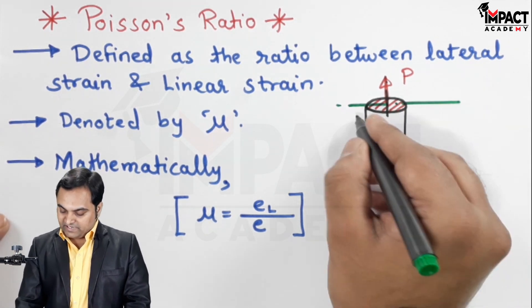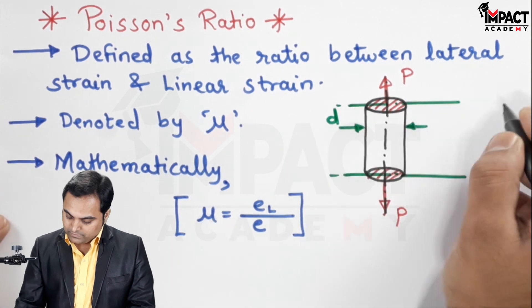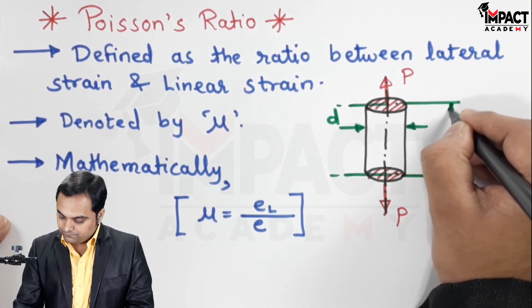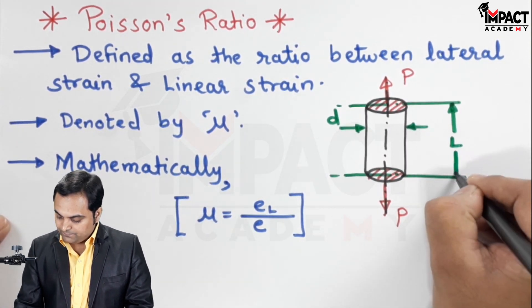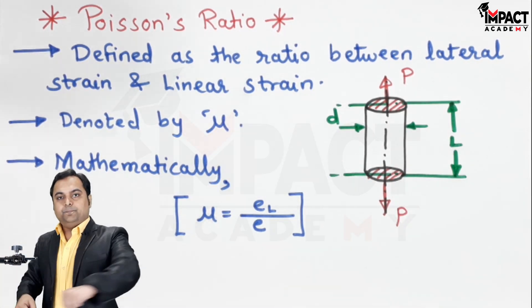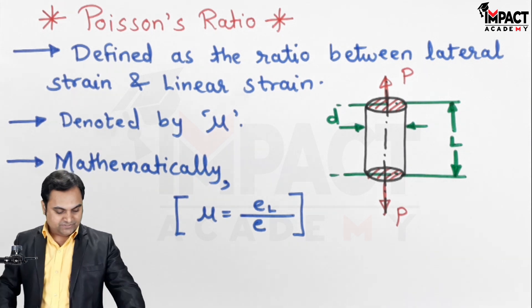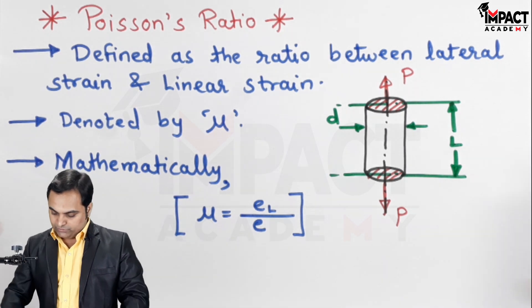The rod is having diameter D and the length of the rod is L. Now under the action of this pull type of load, because of the rod being pulled, the length increases but the diameter decreases.